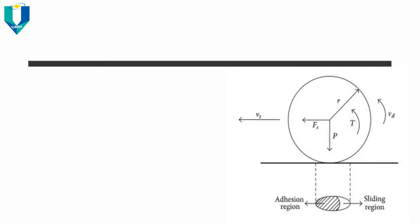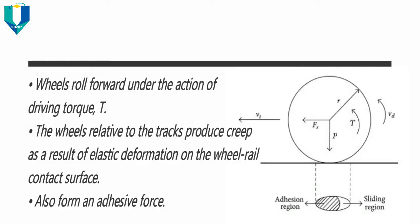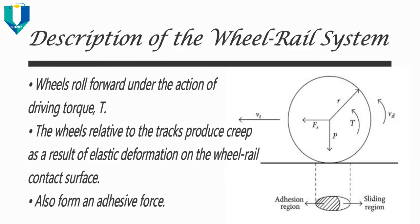The wheels roll forward under the action of driving torque when the train is running. The wheels' relative motion to the track produces slip as a result of elastic deformation on the wheel-rail contact surface. This forms an adhesive force at the contact, which is the only force driving the wheels forward when rolling.